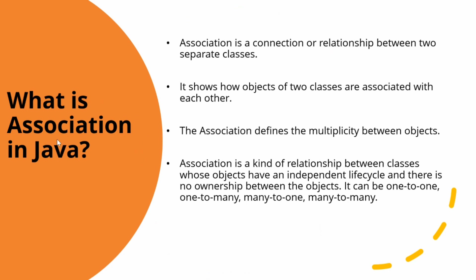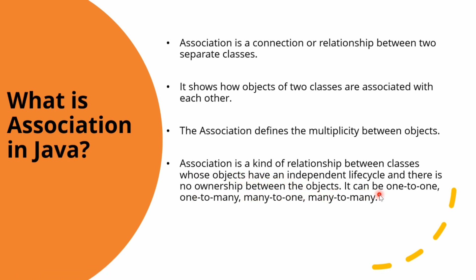So we should know what Association in Java is. Association in Java is one of the building blocks and the most basic concept of object-oriented programming. Association is a connection or relationship between two separate classes — it shows how the objects of two classes are associated with each other. The Association defines the multiplicity between objects. It is a kind of relationship between classes whose objects have an independent life cycle and there is no ownership between the objects.